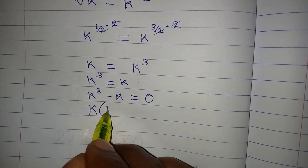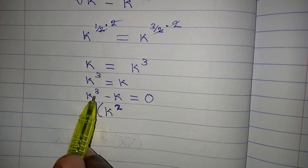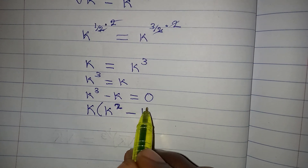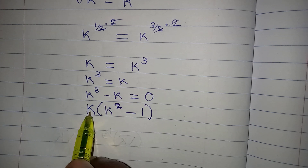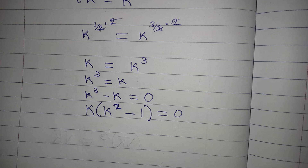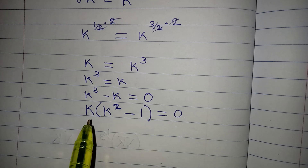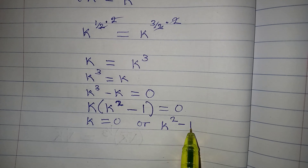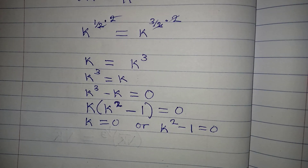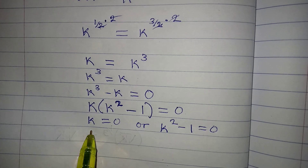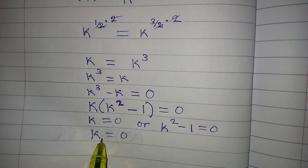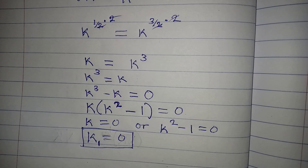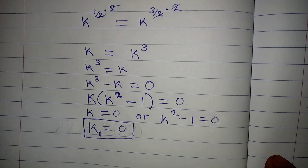We factor out k since it is common. When k comes out, we have k times (k squared minus 1) equals zero. We apply the zero product rule: either k equals zero, which we call k₁ — our first value — or k squared minus 1 equals zero, which will give us two additional values.